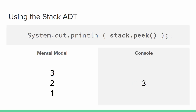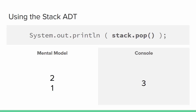Now we start adding elements with push. Each new element goes on top. We push 1, then 2, then 3. The first element added is at the bottom and the last is at the top. Size is now 3 and isEmpty is false. If we peek at the top of the stack we see that 3 is on top, but it doesn't remove 3 — all elements remain. We remove elements with pop: the first call returns 3, the second returns 2, the third returns 1. Size is back to zero and isEmpty is true again.